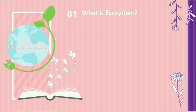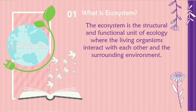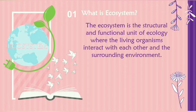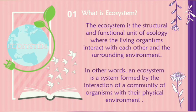I guess you are having the answer. So, the ecosystem is the structural and functional unit of ecology where the living organisms interact with each other and the surrounding environment. I think it's a little hard to read. Let me make it simple for you guys. In other words, an ecosystem is a system formed by the interaction of a community of organisms with their physical environment.